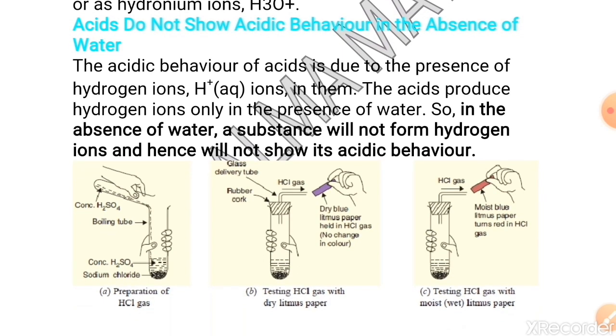Acidic behavior of an acid is due to presence of hydrogen ion, H+ aqueous ion. The acid produce hydrogen ion only in presence of water. So, in absence of water, a substance will not form hydrogen ion and hence will not show its acidic behavior.